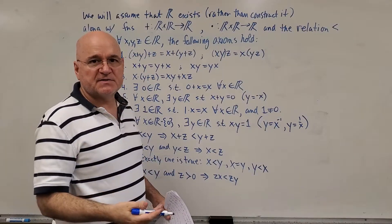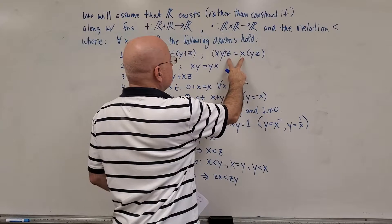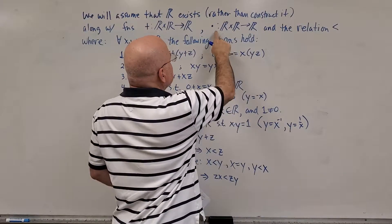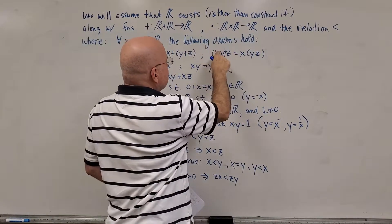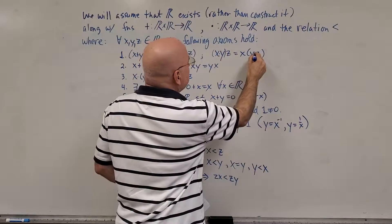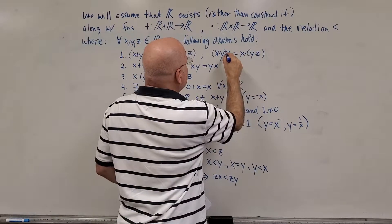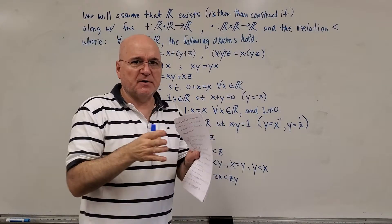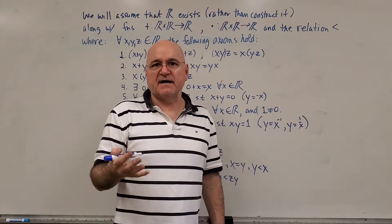And likewise, there's an associative property of multiplication that looks like this. And notice I sometimes, frequently, leave out the dot between the two terms I'm multiplying. If I just put them adjacent to each other, there's an implied dot. It's multiplication.